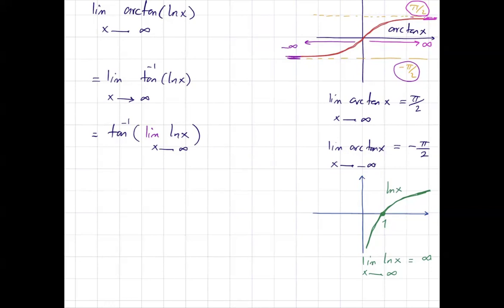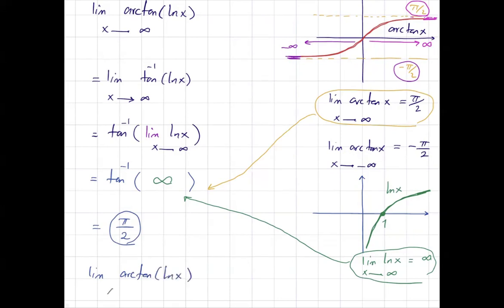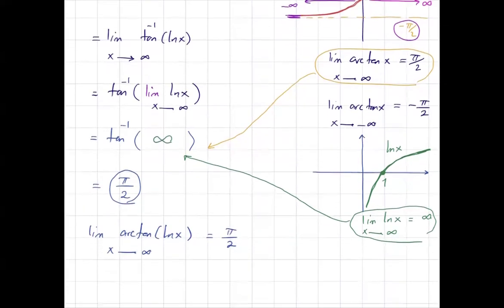So the expression becomes inverse tangent of the limit of ln of x as x goes to infinity, which is infinity. And what is inverse tangent of infinity? It is equal to π/2. Therefore, the limit of arctan of ln of x as x goes to infinity is π/2 — the limit exists and equals π/2.